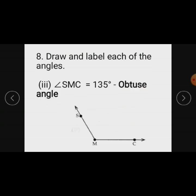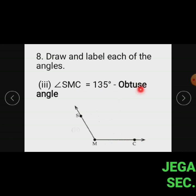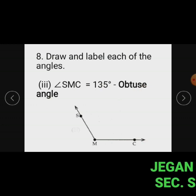Subdivision 3: Angle SMC. We draw angle SMC equal to 135 degrees. An angle whose measure is greater than 90 degrees is called an obtuse angle. So angle SMC is an obtuse angle.